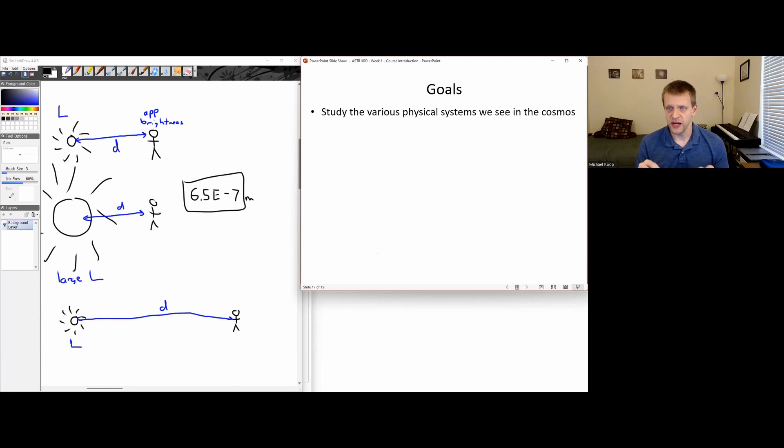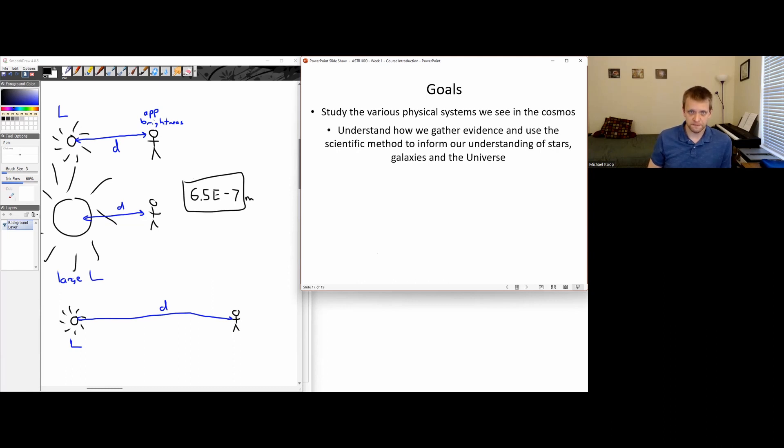A couple last things before I end up this video. What are the goals of this course? We're going to be studying the various physical systems that we see in the cosmos. We're going to be trying to look at how do we actually gather data and gather evidence and use the scientific method to try to inform our understanding of all of these different kinds of celestial objects. One of the things I'm going to try to do a lot with the discussion boards is if I make some claim that you think I can't back up, if you're asking well how do you know that that's actually true, well I want you to call BS on me. We're going to be using some of the discussion questions to say what claims have I made and how can I try to back up those claims, what actual evidence do I have to back up those claims.